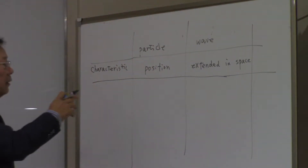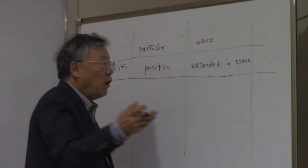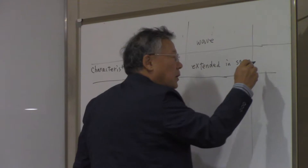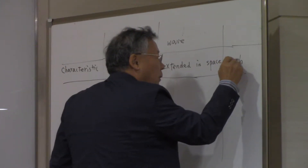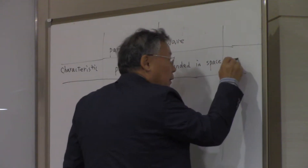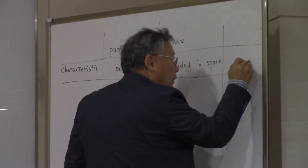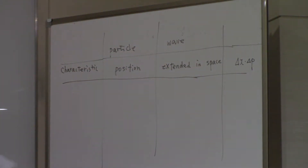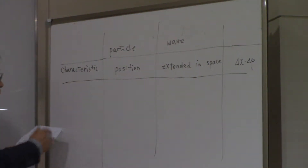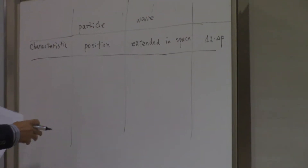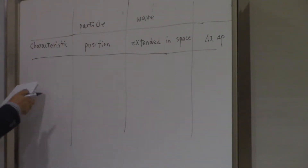The correlation of this particle and wave picture in space is the indeterminacy principle — delta x and delta p product. That makes a correlation of the position characteristic and the extension-in-space characteristic.